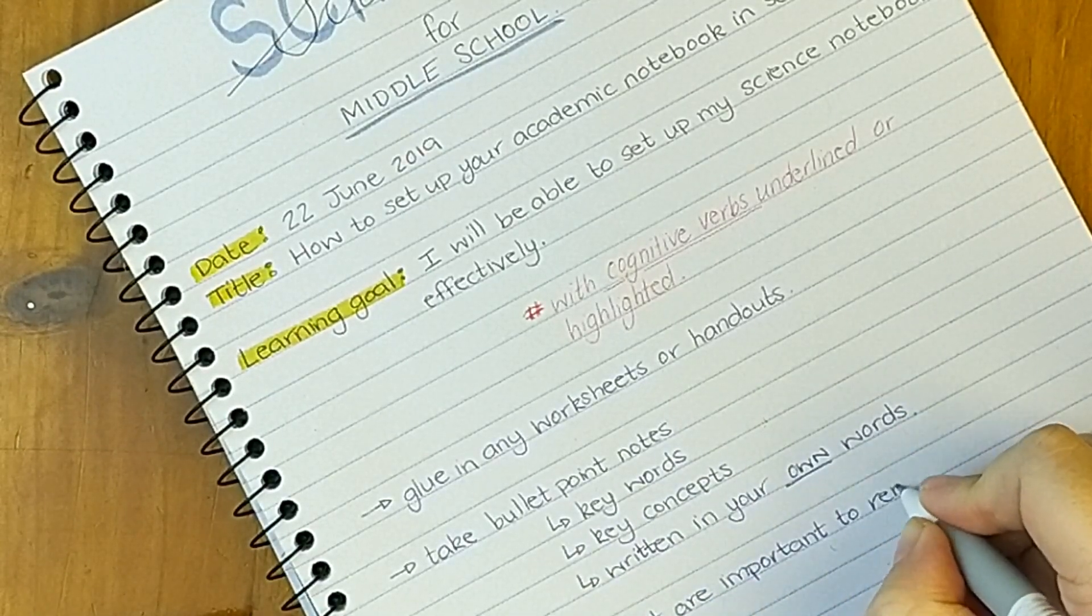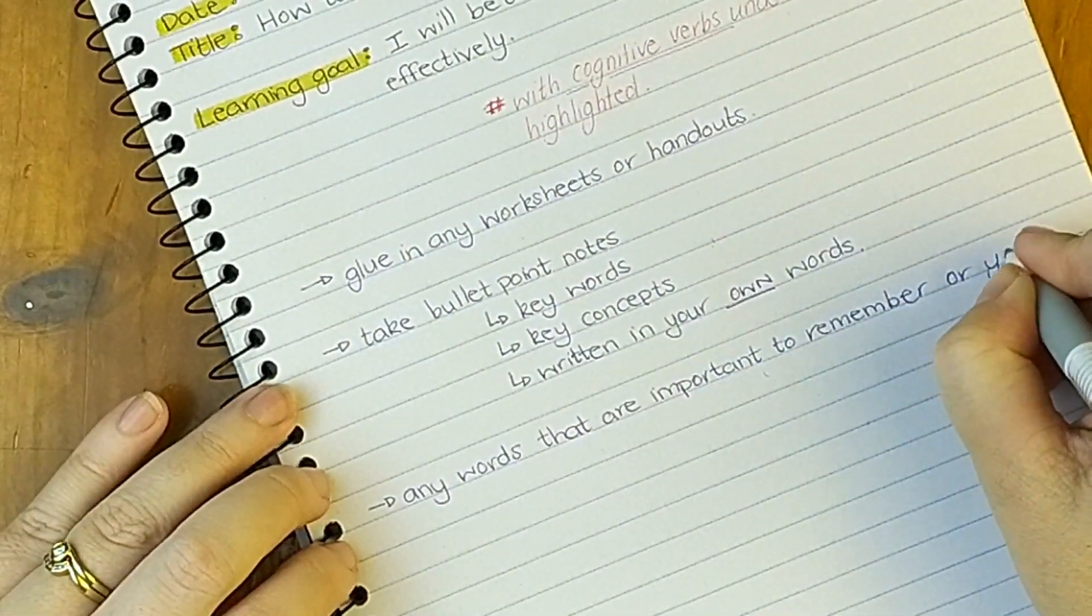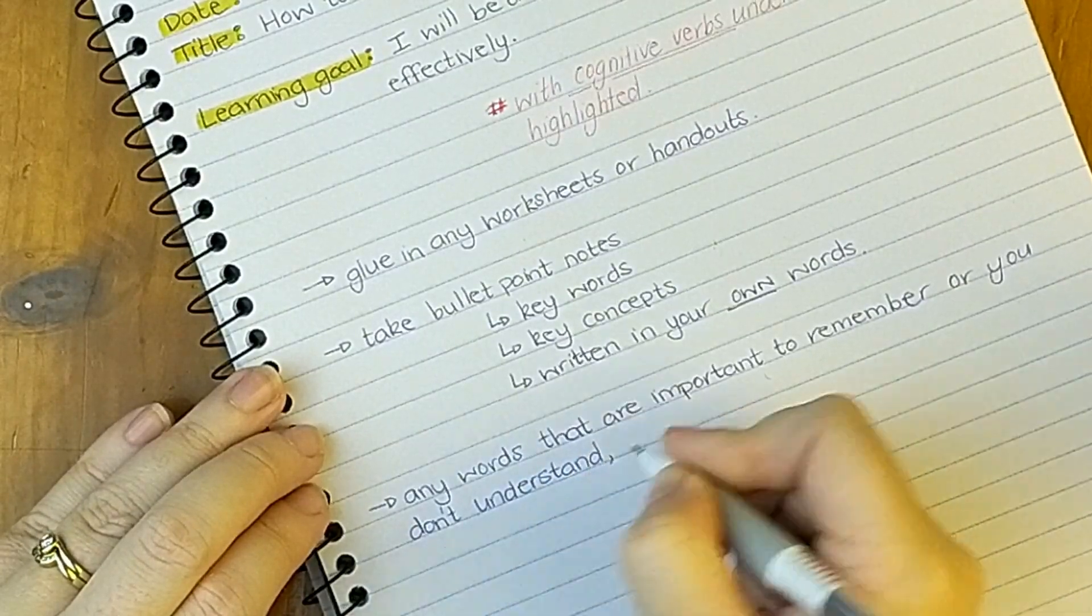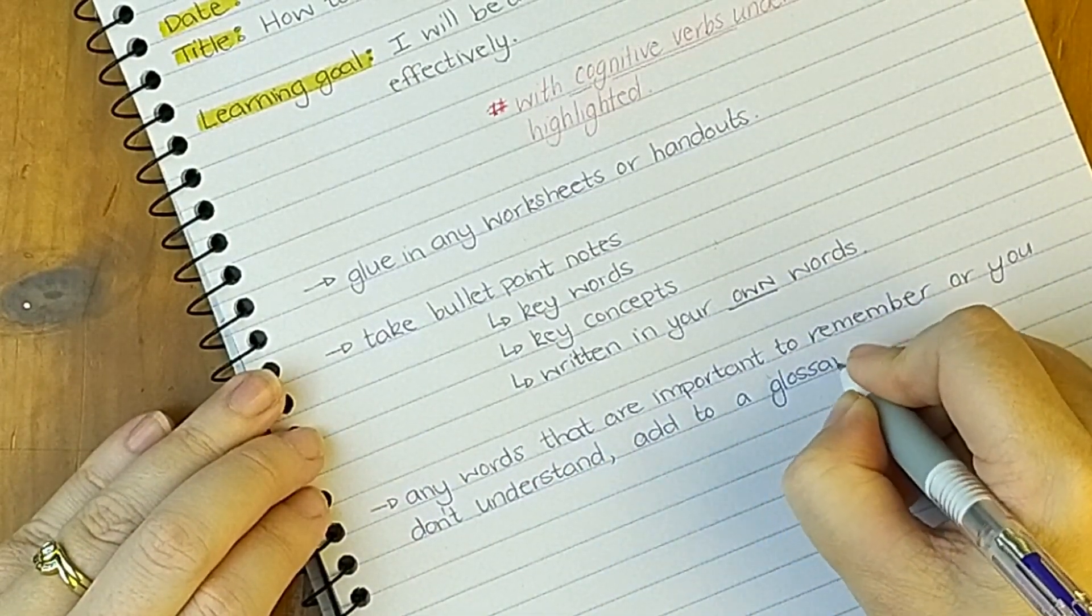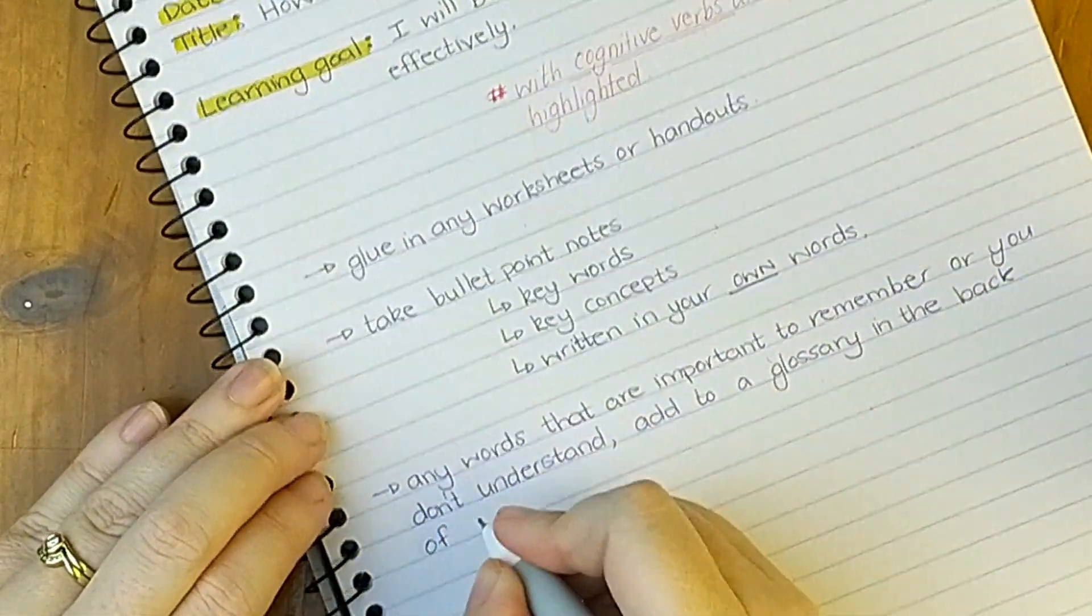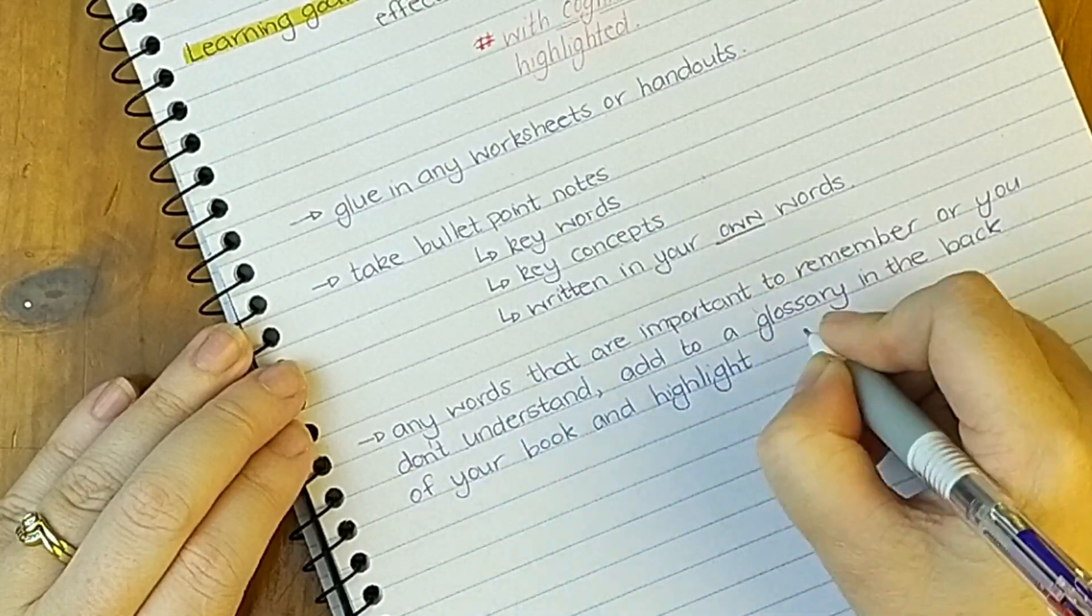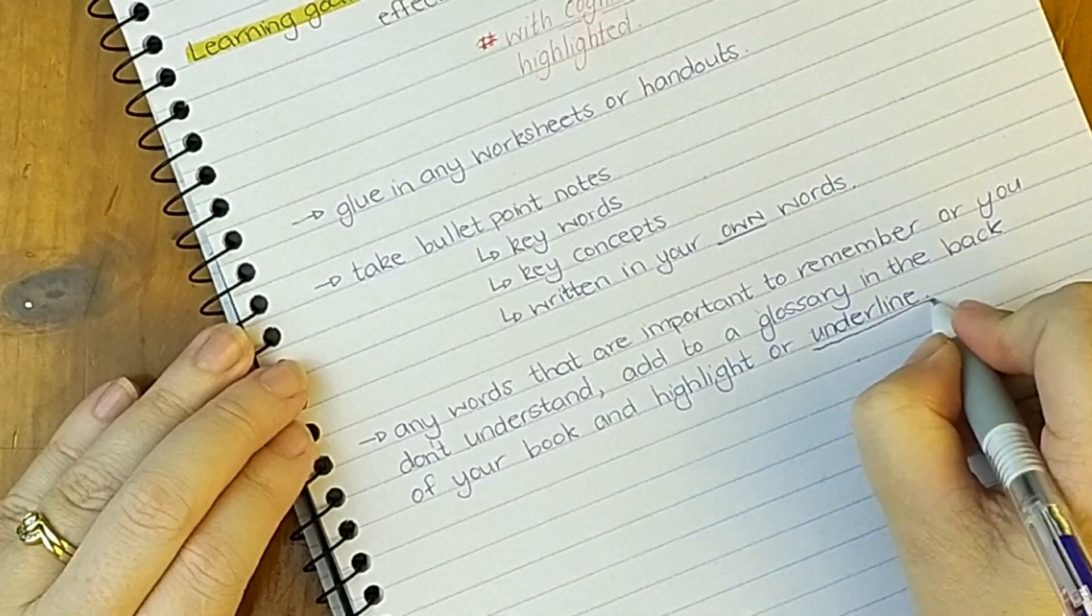If you have any important words that you need to remember or terms that you need to remember, it's a great idea to start a glossary at the back of your notebook and you can write those words and those definitions down there so that you can always go back and look for them at another time. Then of course you can come back to your notes and you can highlight or underline those key terms so that you know that those terms are in your glossary.